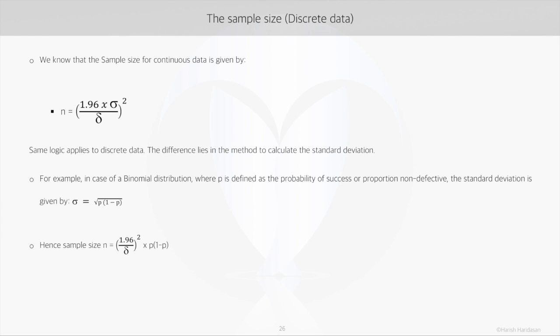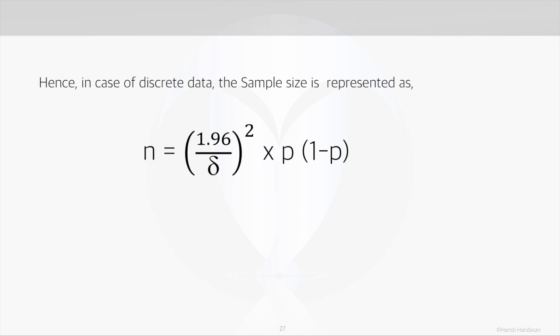This formula is what we end up using when the data is discrete and is following a binomial distribution. Here is the sampling size formula in case of discrete data.